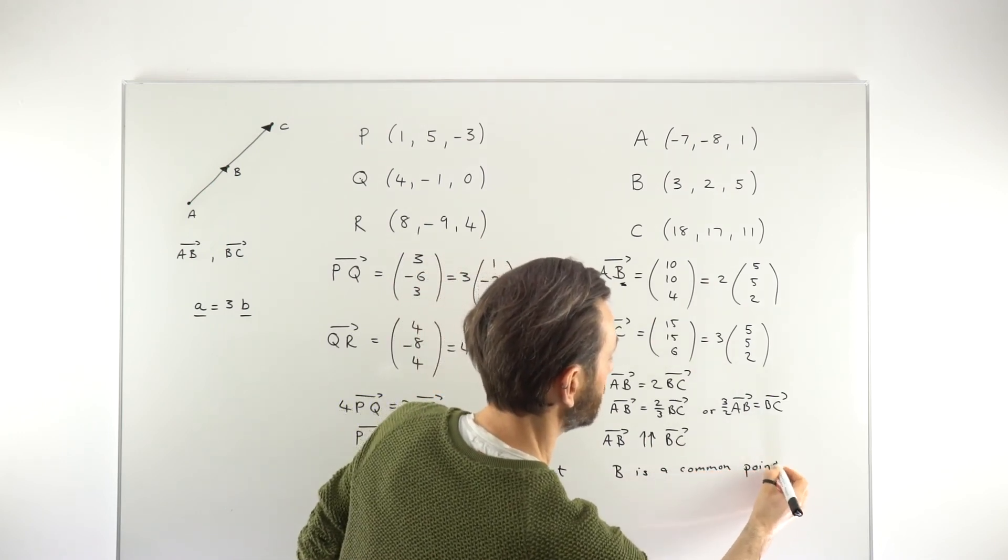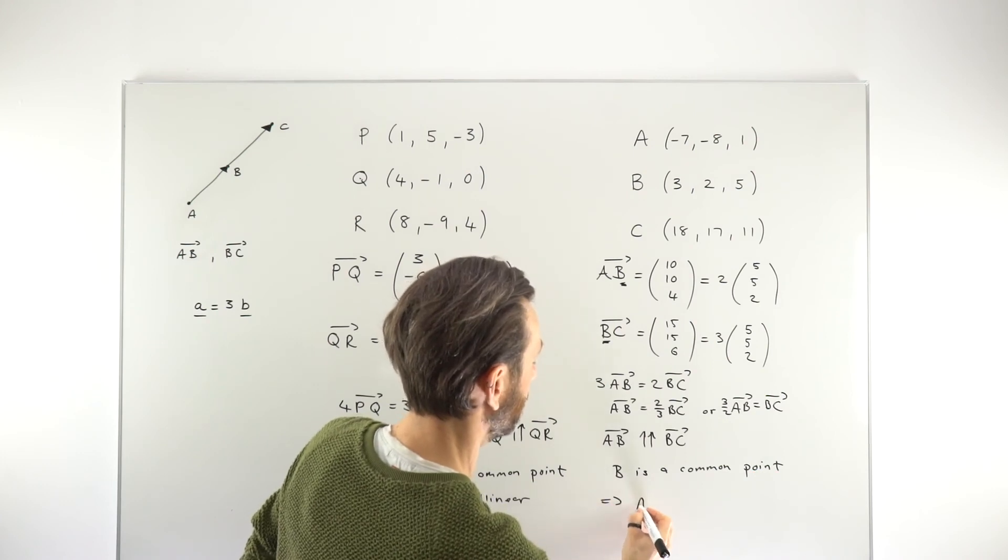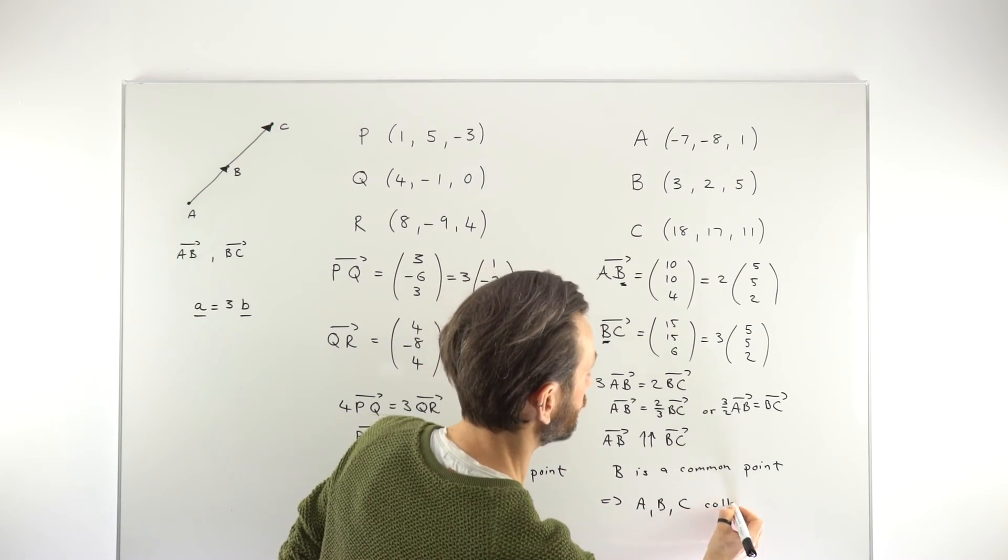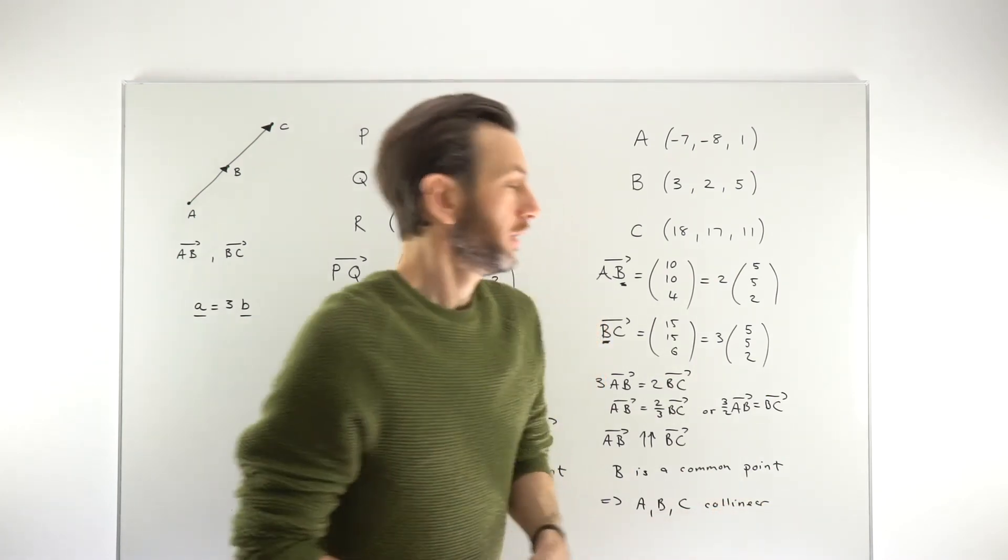And therefore, so pulling everything together, the points A, B and C. So again, the points are collinear, lined up.